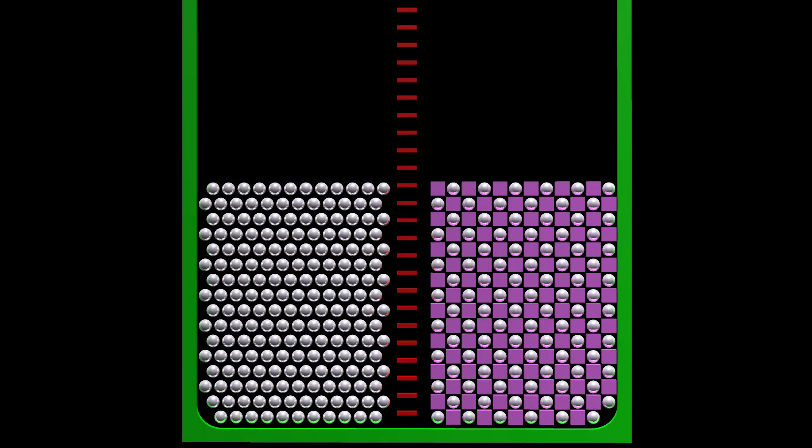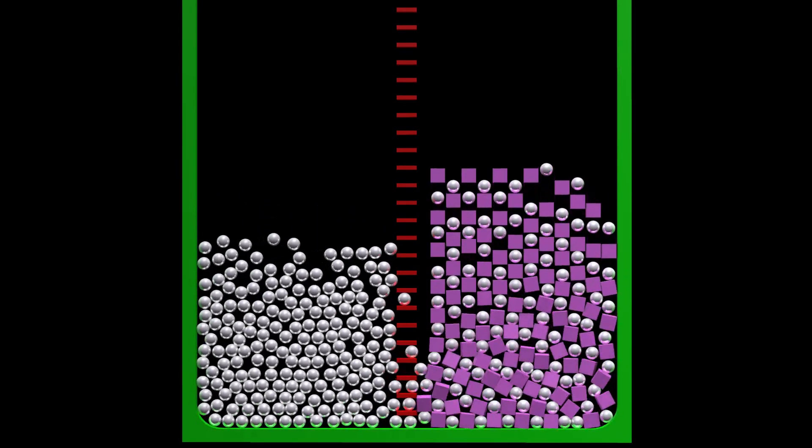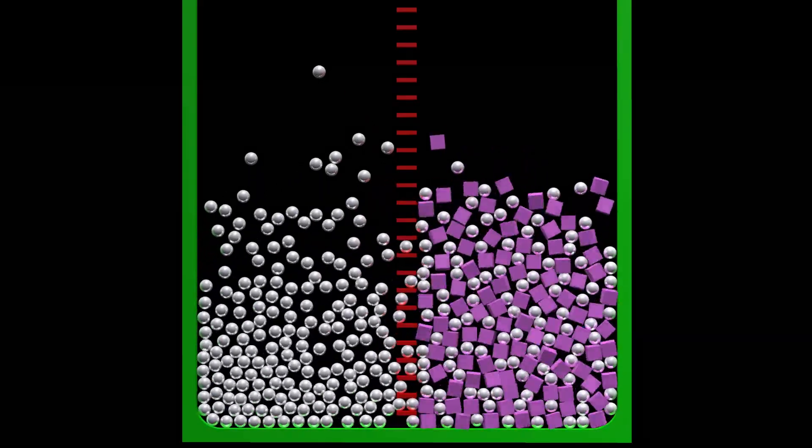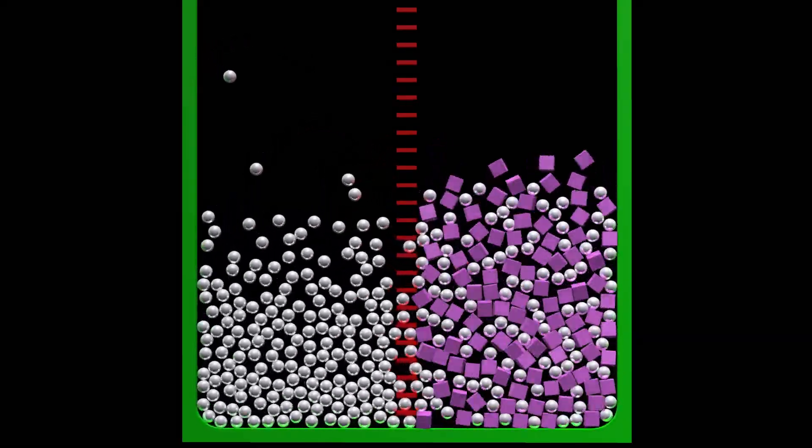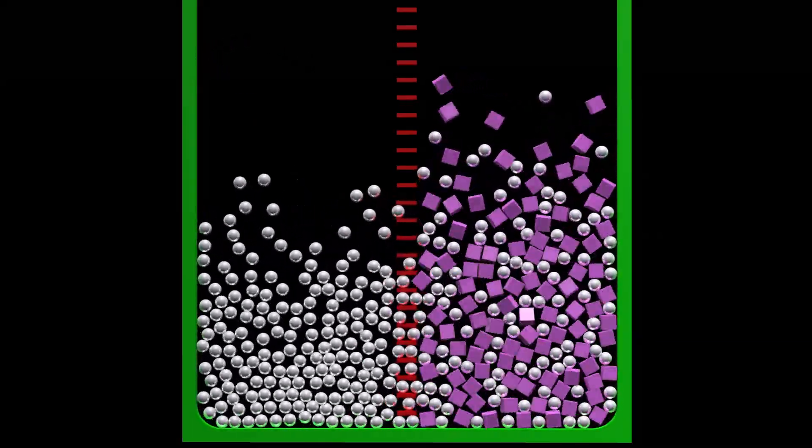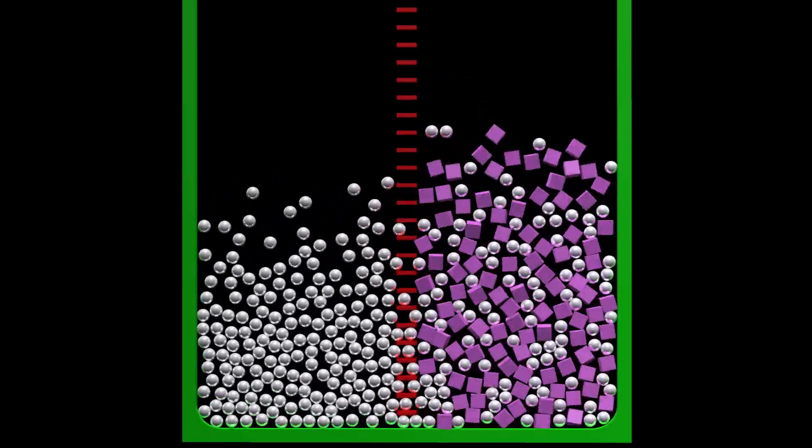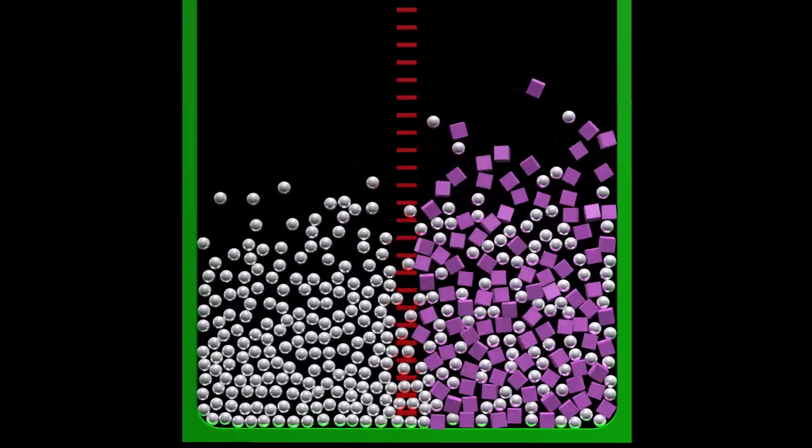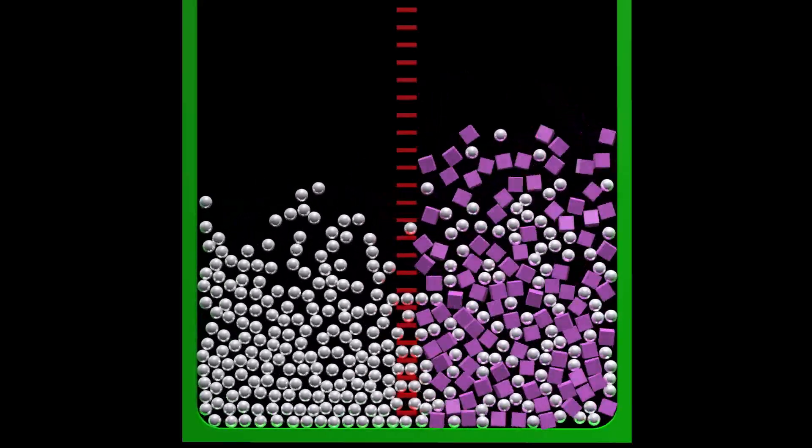We have two types of particles, represented here as balls and squares. In this simulation, the balls and squares have the exact same density, and they interact through perfectly elastic collisions.